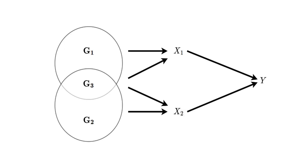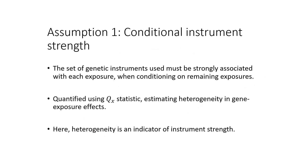Estimating these direct causal associations relies upon a set of assumptions analogous to our conventional MR assumptions. First, the set of genetic variants we use must be robustly associated with each exposure we include in our model. Importantly, it is the strength of association conditional on the remaining exposures in the model that is important. Conditional instrument strength is quantified using a modified form of Cochrane's Q statistic, here labeled QX, where a higher degree of heterogeneity is an indicator of greater instrument strength. This heterogeneity statistic can be converted into an F statistic and compared to the conventional thresholds for instrument strength used in MR. Typically, an F statistic greater than 10 is an indicator of sufficient instrument strength for analyses.